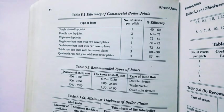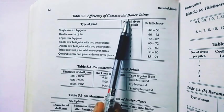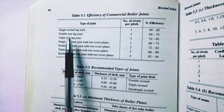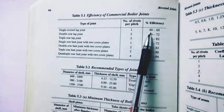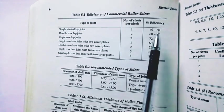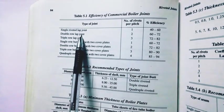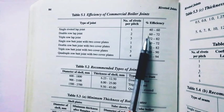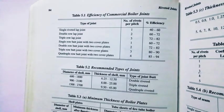This is the efficiency of the commercial boiler joint. Now, the single riveted lap joint is 40 to 60% efficiency. Double draw lap joint is 62 to 72%. Butt joint is 85 to 94% efficiency.